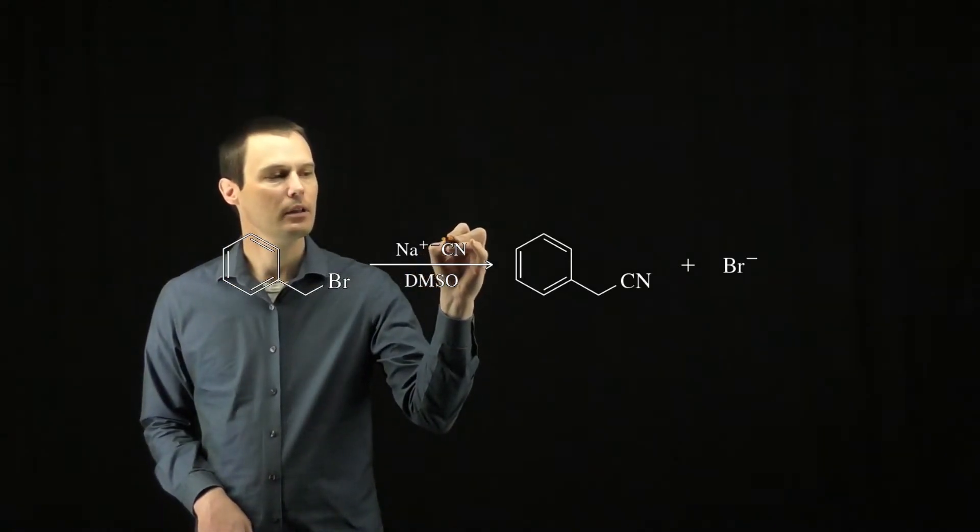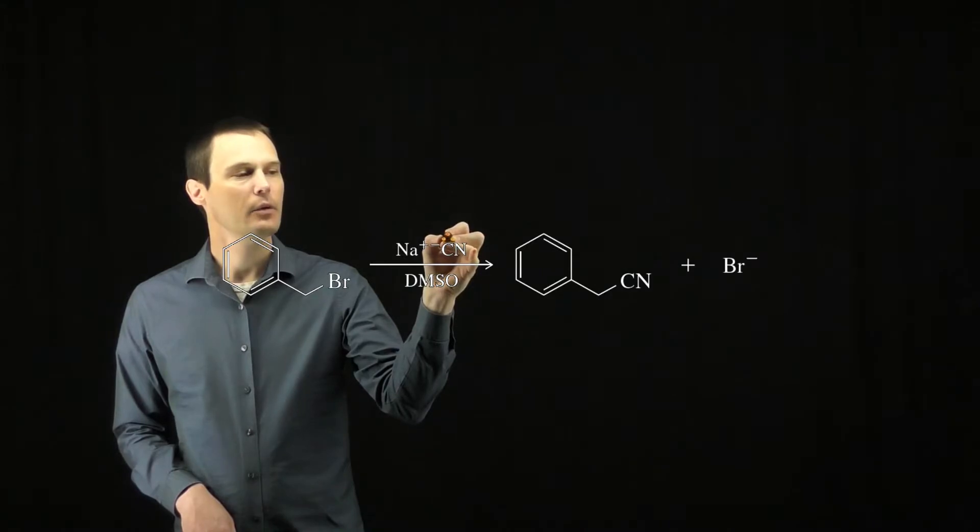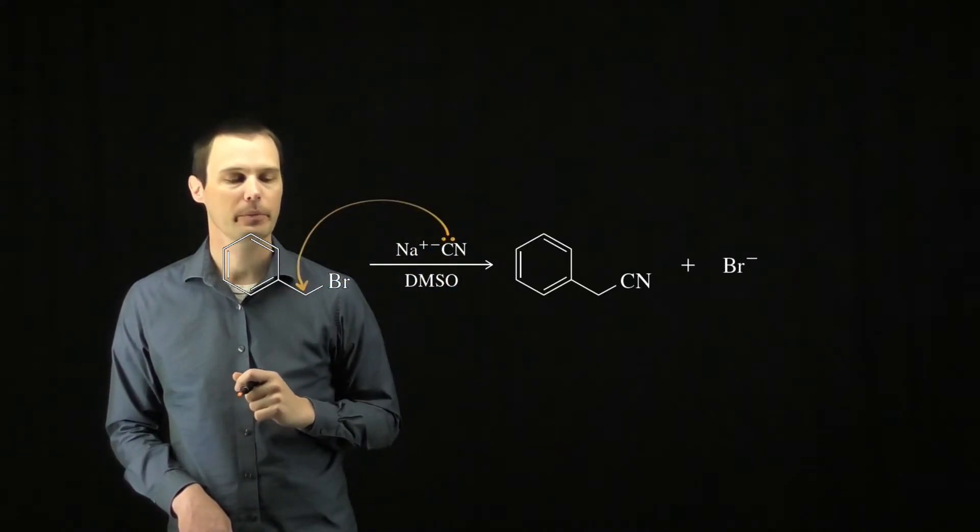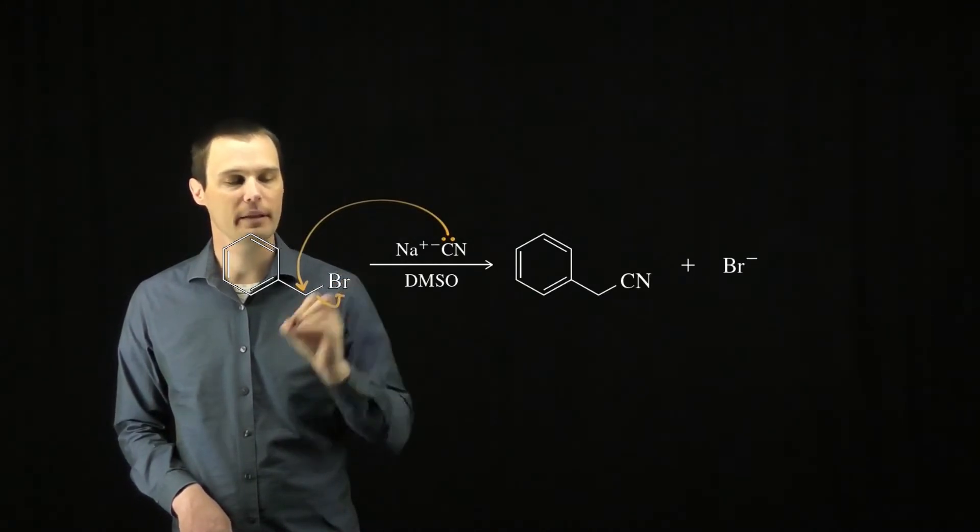We'll start with the lone pair on the cyanide anion. We can use that lone pair to attack the carbon bearing the leaving group. That builds up too much electron density around this carbon, so we need to break the carbon-bromine bond, kicking out the bromide leaving group.